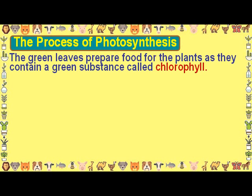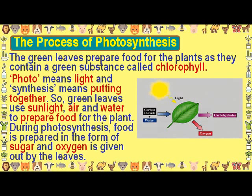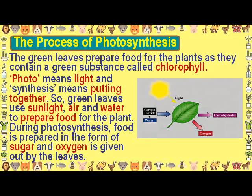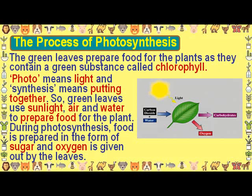The process of photosynthesis: green leaves prepare food for plants as they contain a green substance called chlorophyll. Photo means light and synthesis means putting together. So green leaves use sunlight, air, and water to prepare food for the plant.